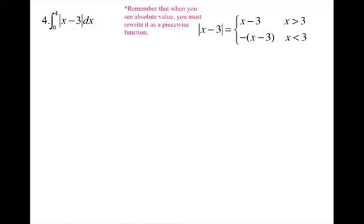For number 4, absolute value. Remember that when you see absolute value, you must rewrite it as a piecewise function first, off to the side. So I'm going to rewrite the absolute value of x minus 3 to the positive side. This stuff inside will be positive when x is bigger than 3. And it will be negative when x is less than 3.